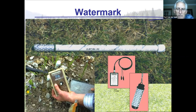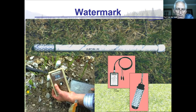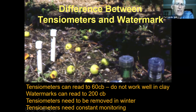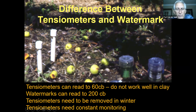I probably prefer tensiometers because you can just walk by and read them. Key differences: tensiometers don't read as high a drought level; Watermarks read higher; Watermarks are cheaper; Watermarks can be left in the ground over winter since they won't freeze, whereas tensiometers you have to remove — if left in over winter the water will freeze and they'll break.